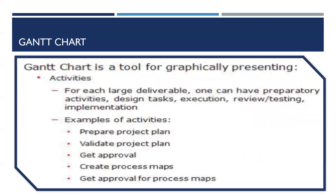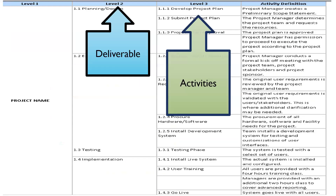For each large deliverable, you can have preparatory activities: design tasks, execution, review, testing, and implementation. Examples include: validate project plan, get approval, create process maps. In our table, the activity 'develop project plan' is under planning and design — so that deliverable is planning and design, and the activities are: develop project plan, submit project plan, and install development system.